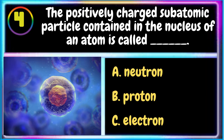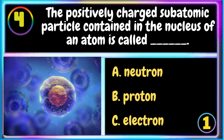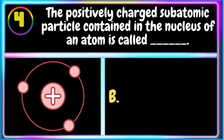4. The positively charged subatomic particle contained in the nucleus of an atom is called: A. Neutron B. Proton C. Electron. The correct answer is B. Proton.